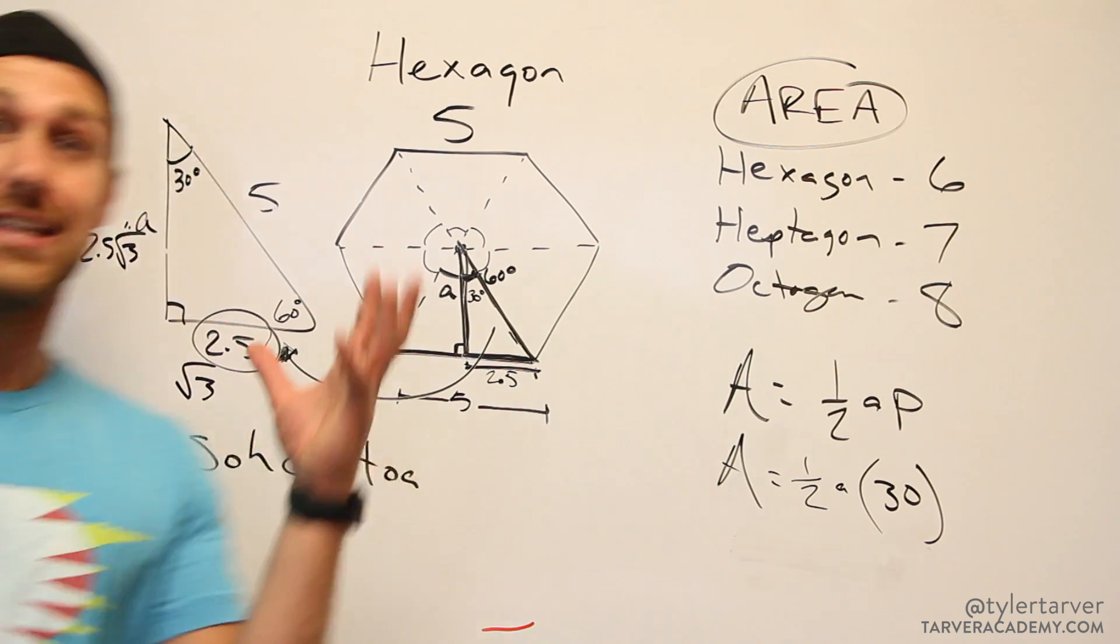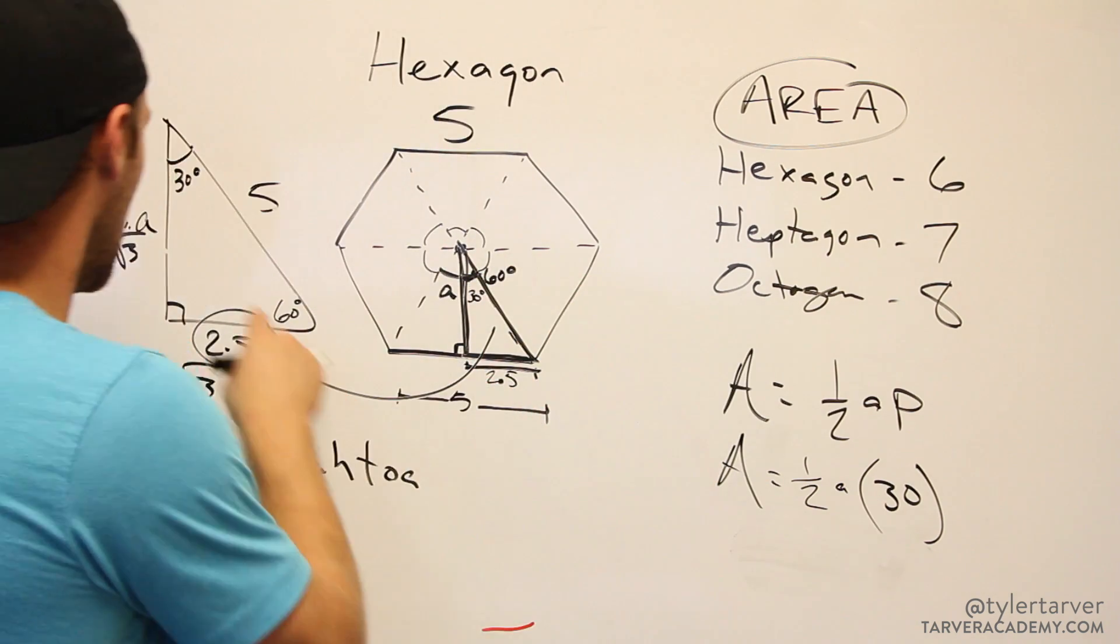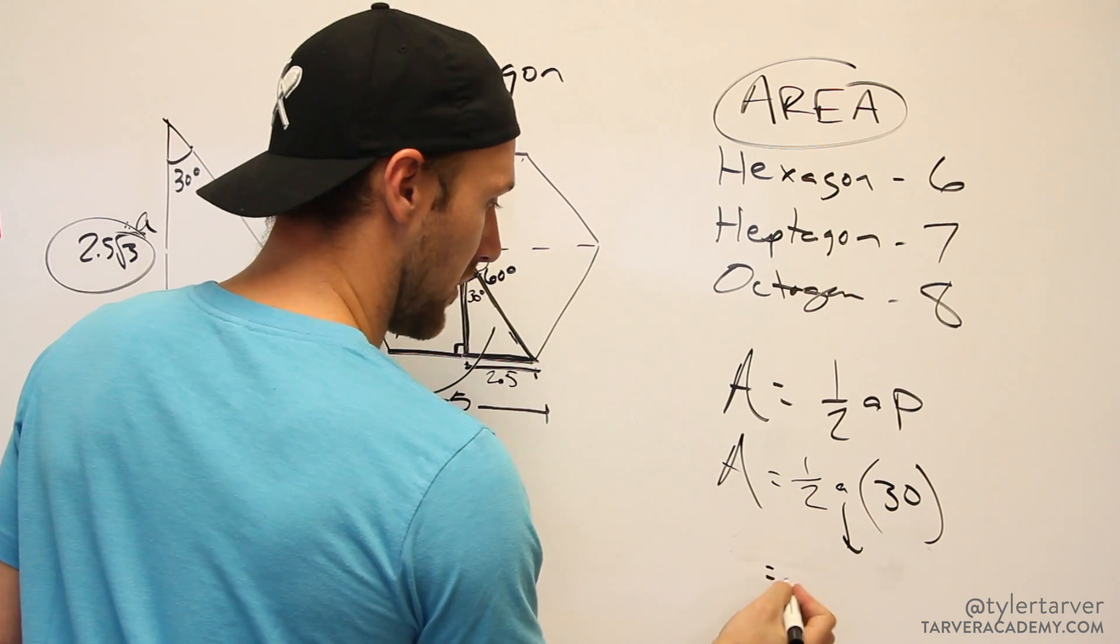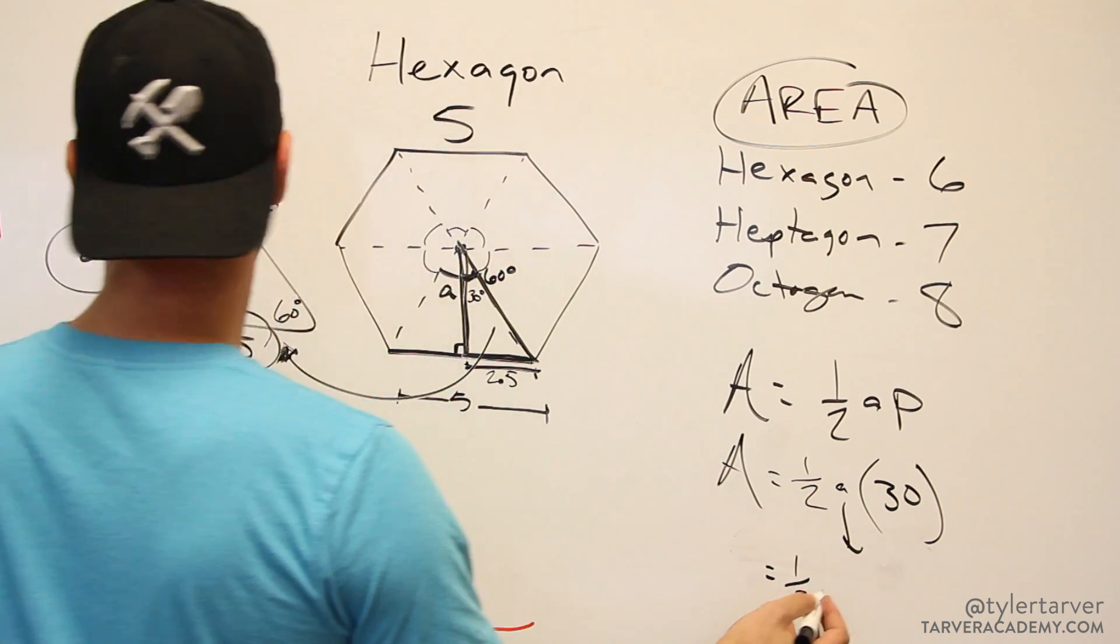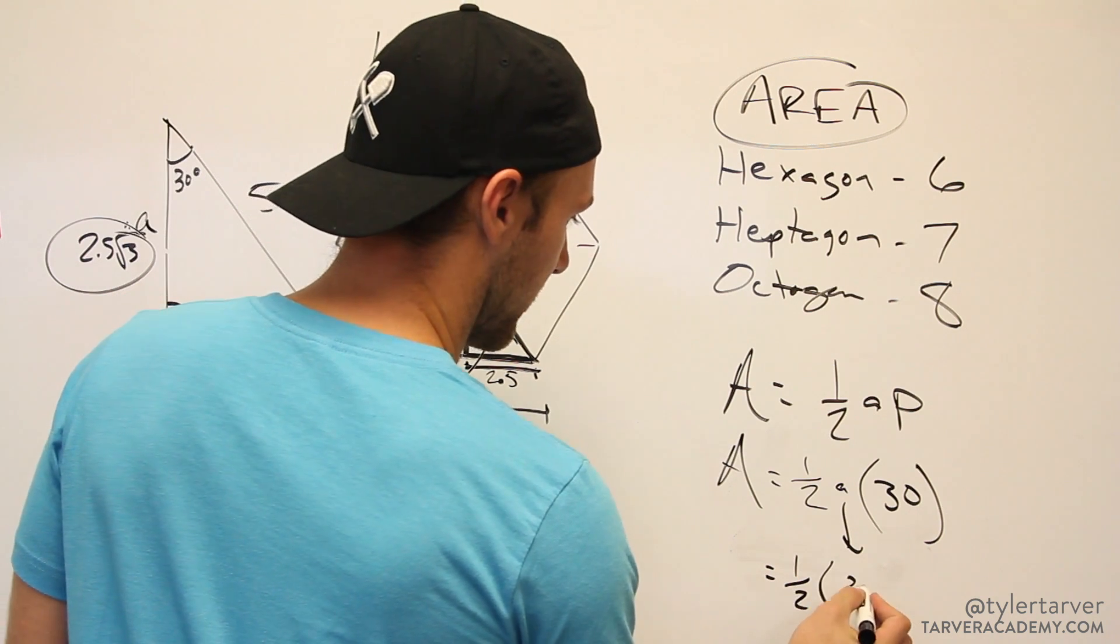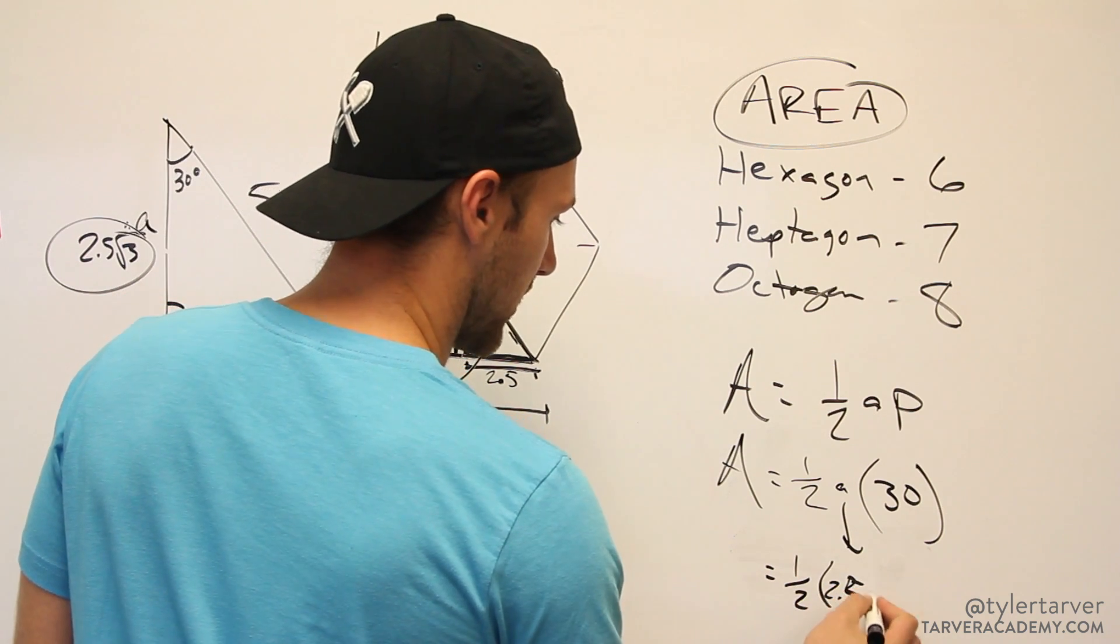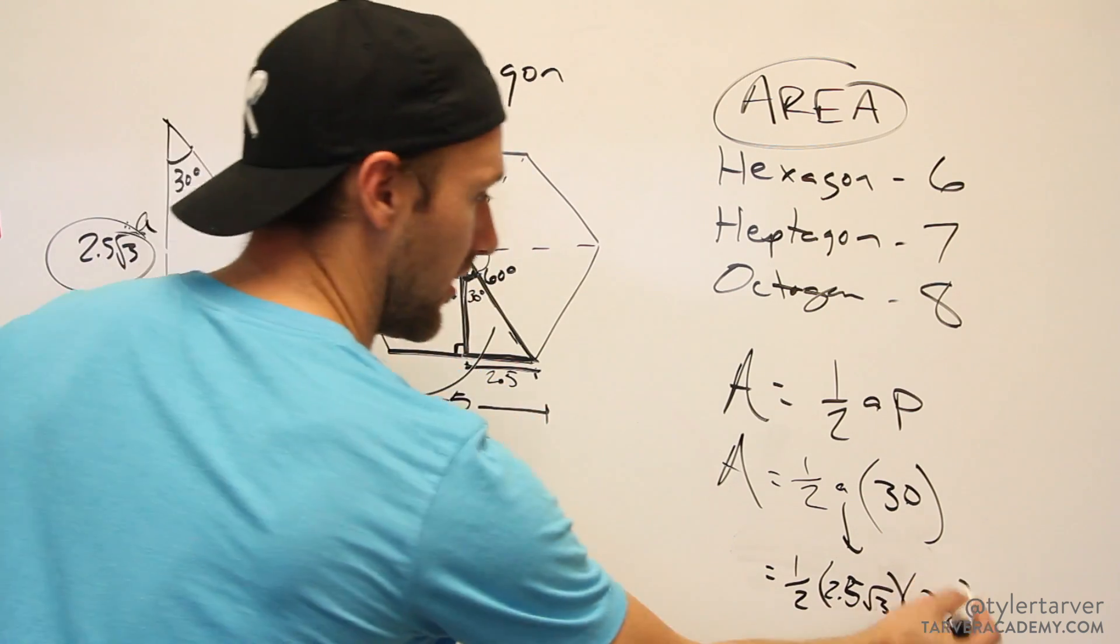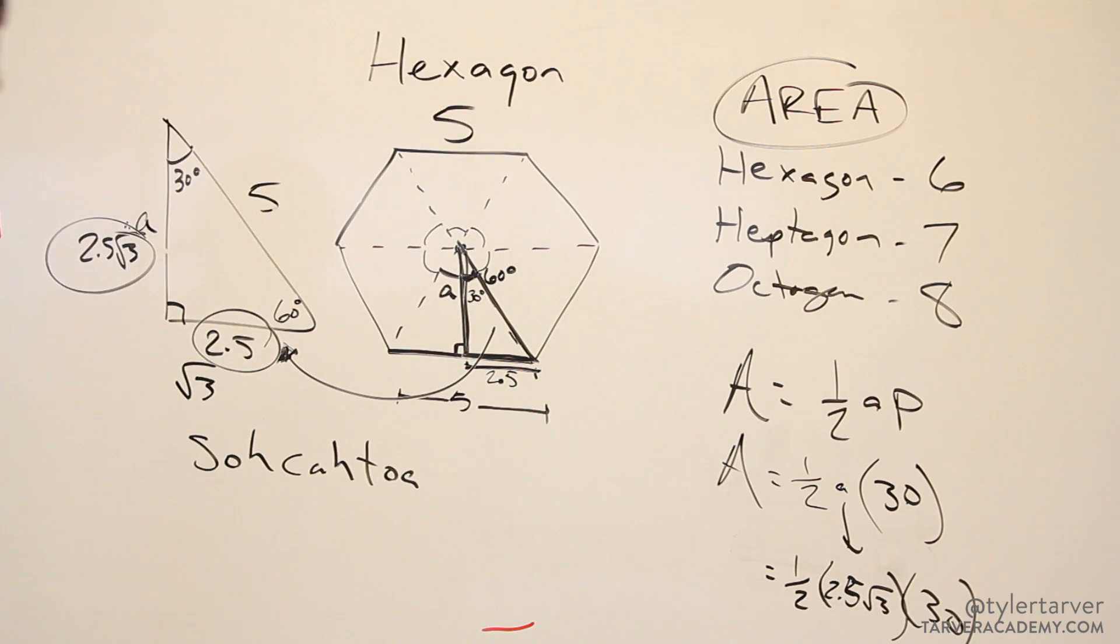Did we find something we needed? Yes we did! So what I would do is I would plug this in for apothem. So it'd be one-half times 2.5 times radical 3 times 30, and I can find my area.